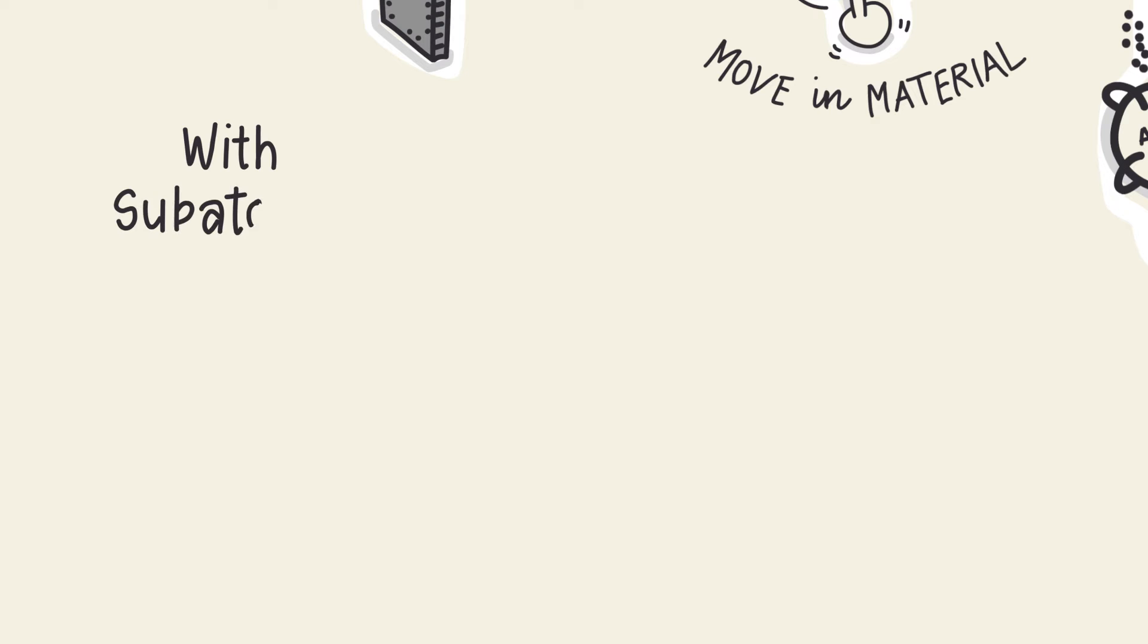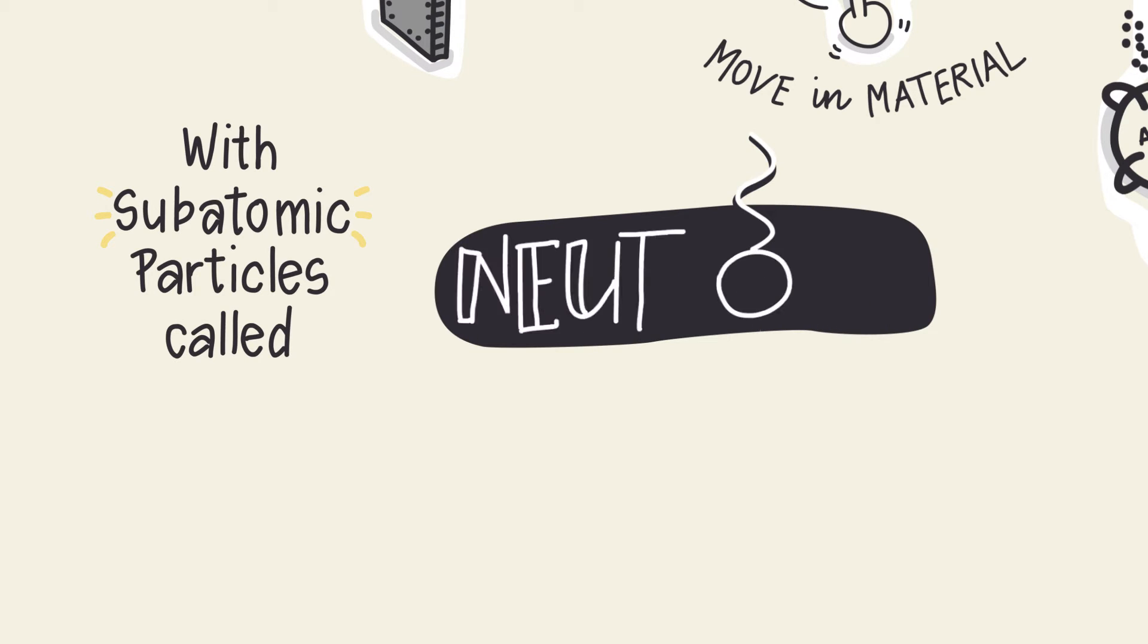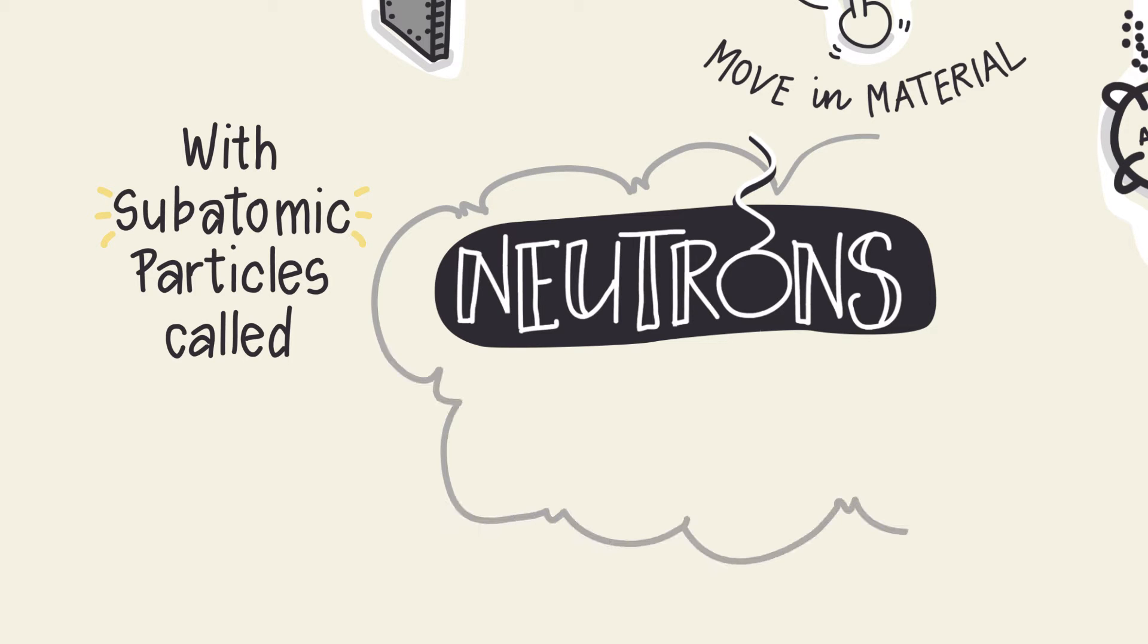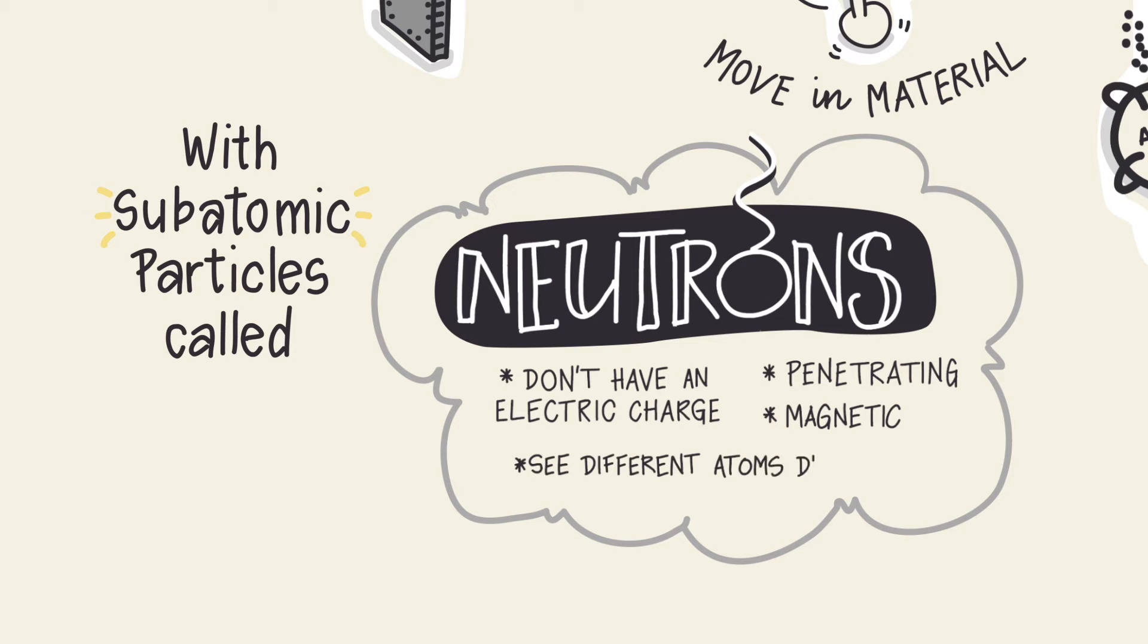And they're doing it with special subatomic particles called neutrons. What's so special about neutrons? They don't have an electric charge, they're highly penetrating, and they are magnetic. Plus neutrons see different atoms differently.